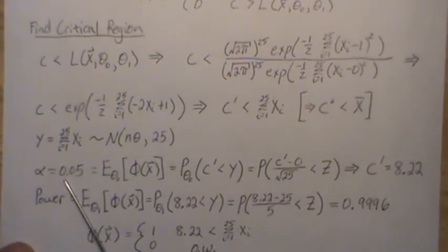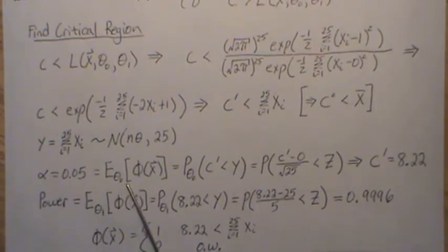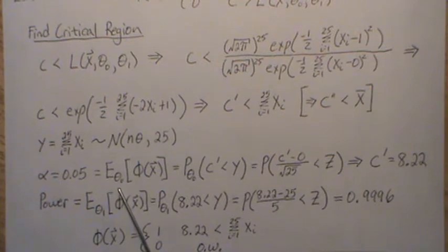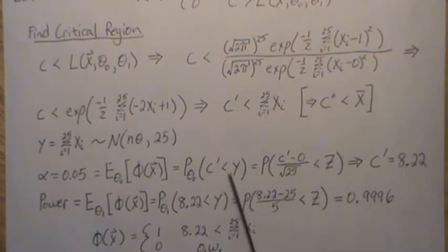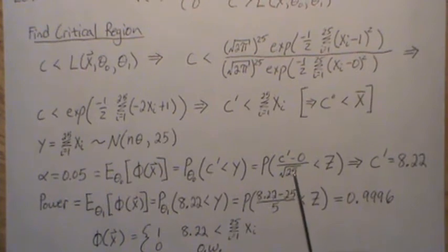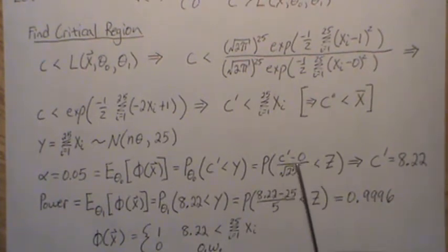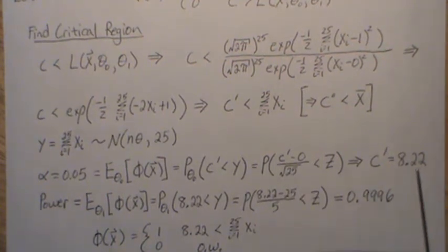The probability of a type 1 error is set to 0.05. It's the expected value of the test function when the null is true, so it's the probability that Y is greater than C-prime under the null. Subtracting the mean from both sides and dividing by the standard deviation gives a standard normal, so it's the probability that Z is greater than that value.